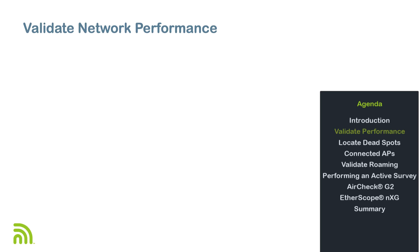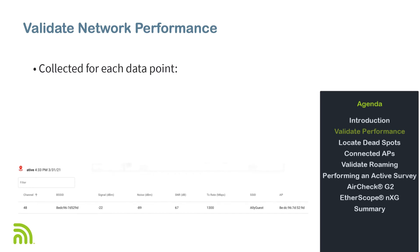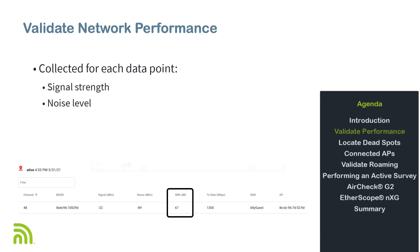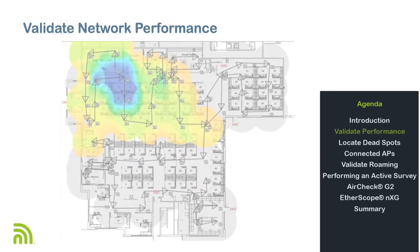Unlike a passive survey, when performing an active survey, the analyzer is connected to a specific wireless network. This allows us to measure performance from the client's perspective at each data point. By connecting to the Wi-Fi network instead of just passively listening, we can measure the data rate that may be achieved by a client at specific locations in the facility. This performance information allows the person analyzing the results to quickly identify areas where performance is below the expected threshold.